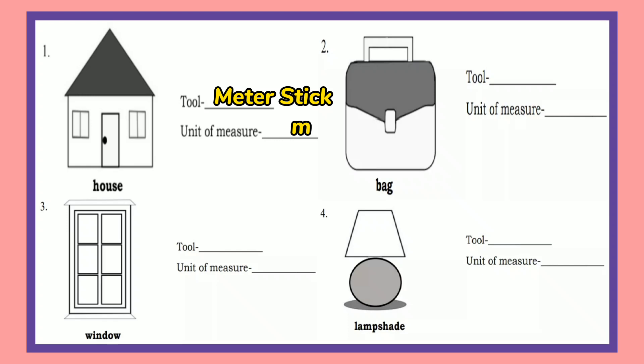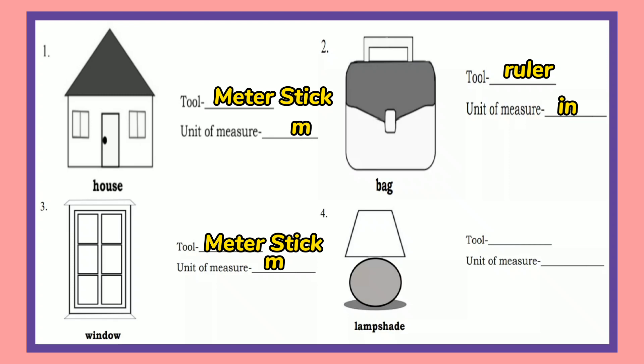Number two: the tool we are going to use to measure the bag is a ruler, and the unit is inches. Number three: the tool we are going to use to measure the window is a meter stick, and the unit is meter. Number four: the tool we are going to use to measure the lamp shade is a ruler, and the unit is inches.